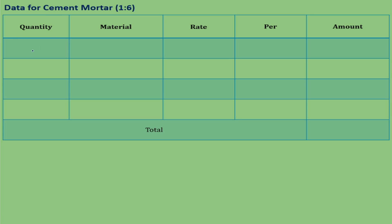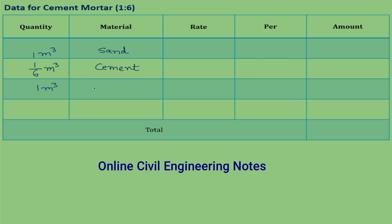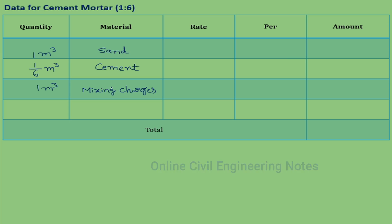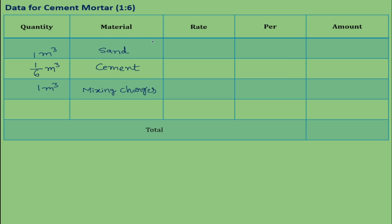To find the cost of cement mortar 1:6, prepare a table and derive the quantities for 1 cubic meter of 1:6 proportion mortar. Cement quantity is 1/6 cubic meter. The rates of sand and cement are taken from the lead statement. Sand rate is 1189 rupees per cubic meter and cement rate is 6192 rupees per cubic meter. Mixing charges are given as 90 rupees per cubic meter.